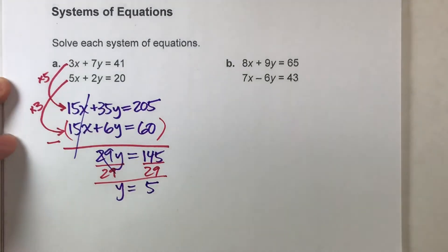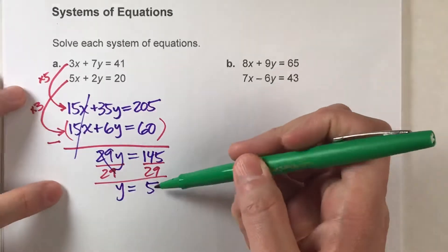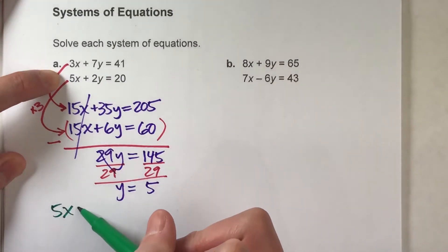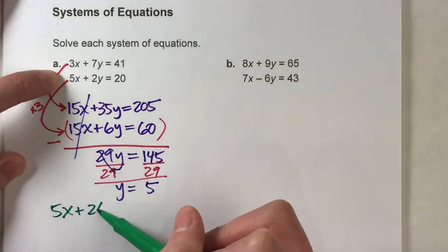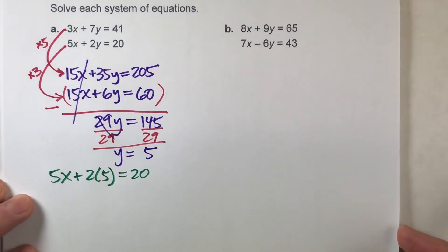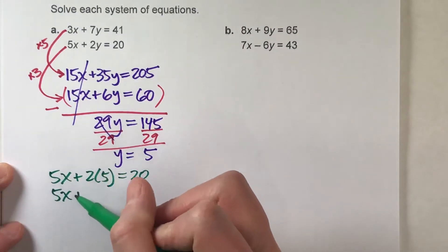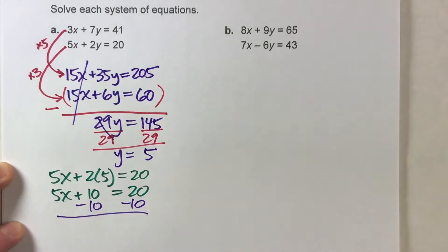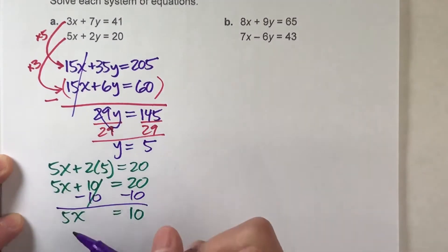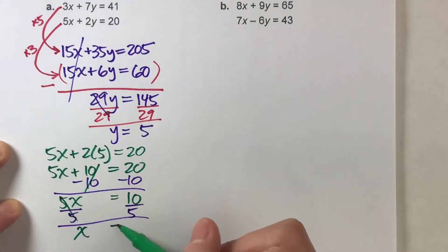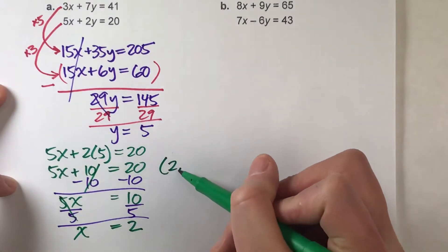Now to get x, I'm going to have to put y back into one of the original problems. I'm going to pick the second one because it's a little bit smaller. So 5x plus 2 times y, and we already know y is 5 now, so 2 times 5 equals 20. So I know 2 times 5 is 10, so let's simplify this. 5x plus 10 equals 20. And now let's just solve this. Subtract 10 on both sides. 5x equals 10, and then divide both sides by 5. I'm going to get x equals 2. So now we have our solution: x is 2, y is 5.